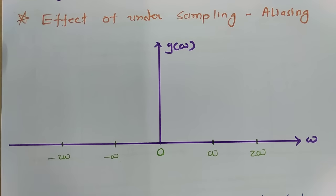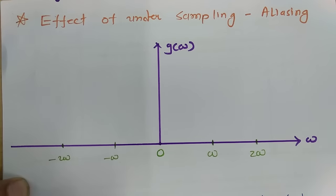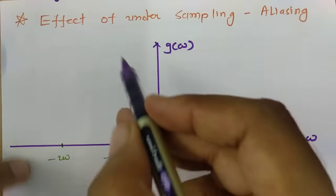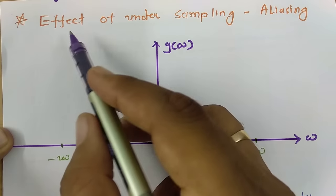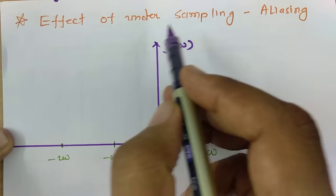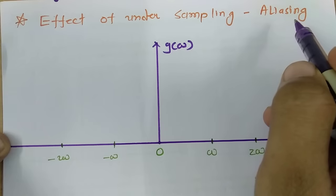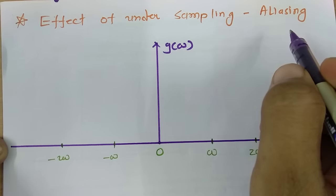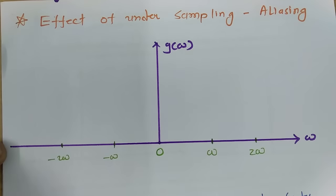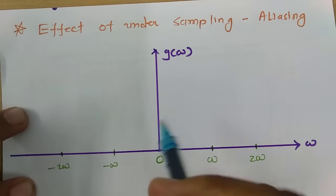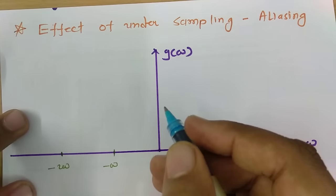Welcome to the digital communication engineering playlist. In this session I will be explaining the effect of undersampling, which is also referred to as aliasing. First of all, let's understand what undersampling is and how aliasing happens.